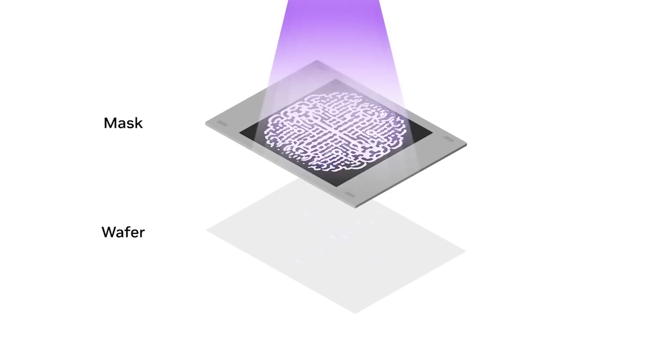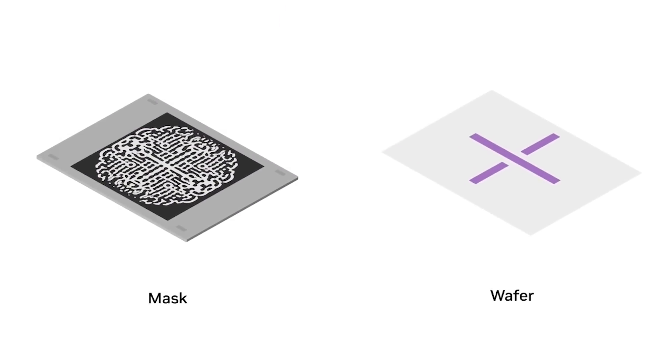Computational lithography applies inverse physics algorithms to predict the patterns on the mask that will produce the final patterns on the wafer. In fact, the patterns on the mask do not resemble the final features at all.